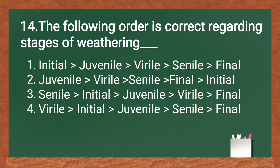The following order is correct regarding stages of weathering: Initial, juvenile, virile, senile, final. The answer is option A — initial, juvenile, virile, senile, and final stage.